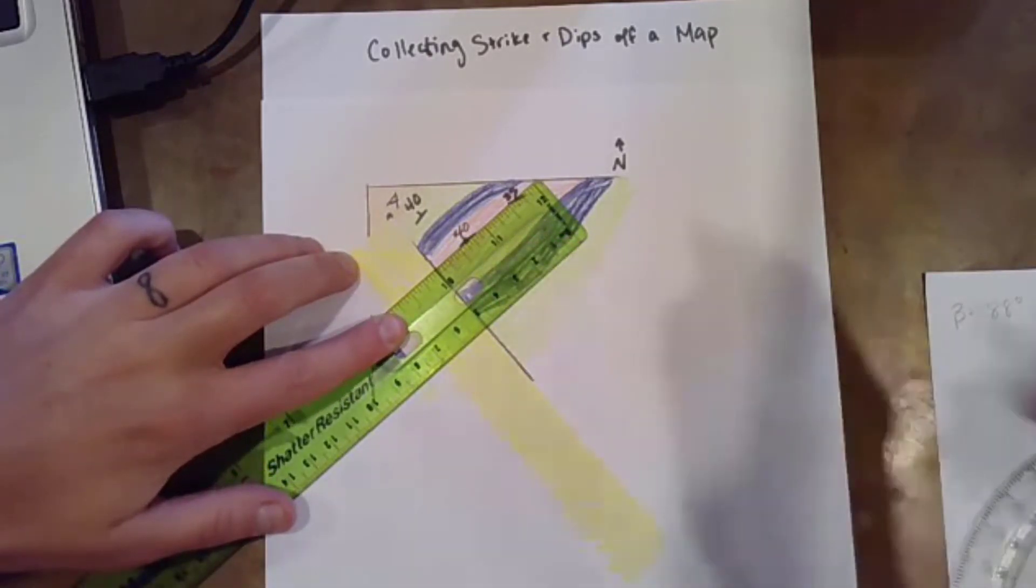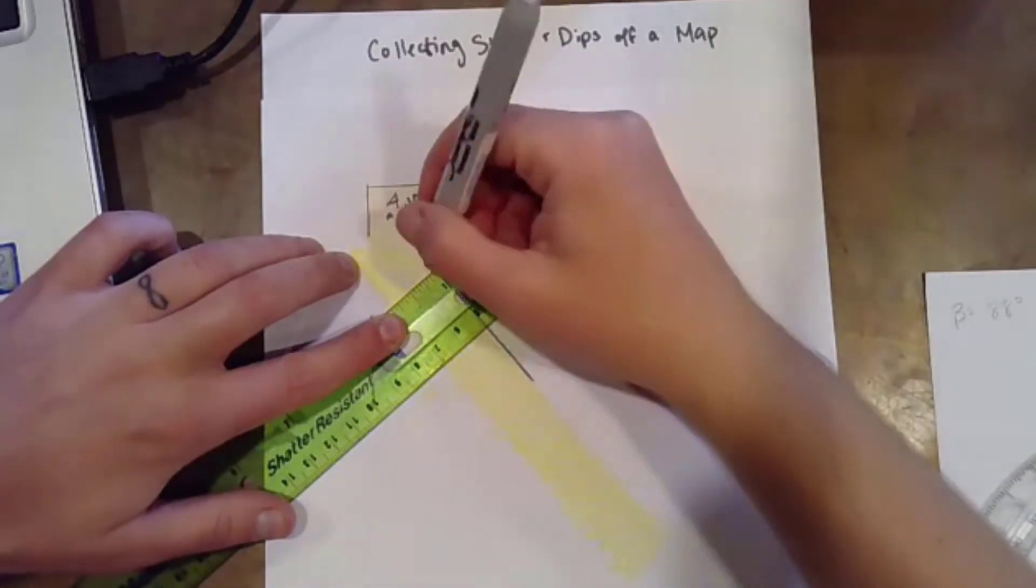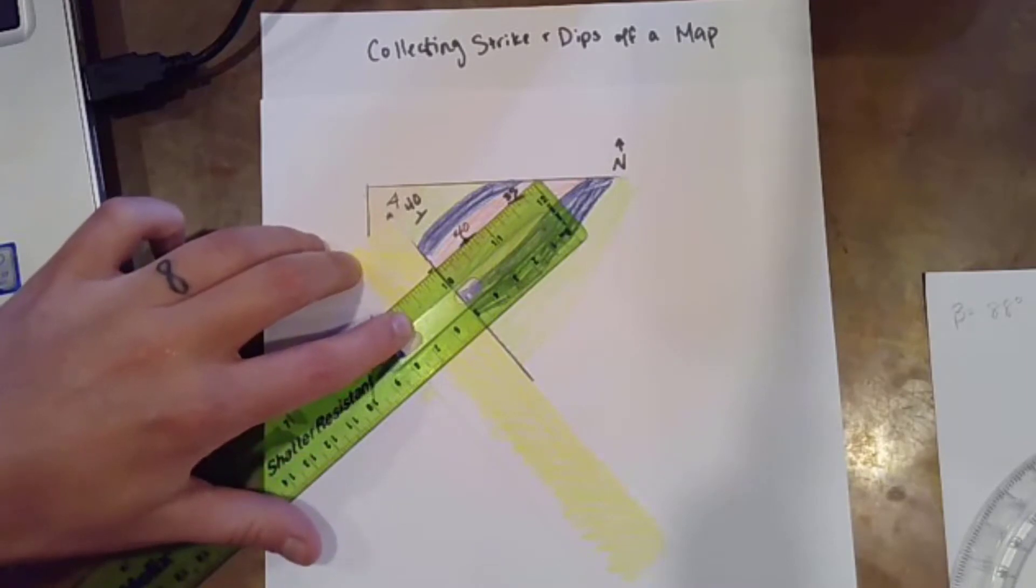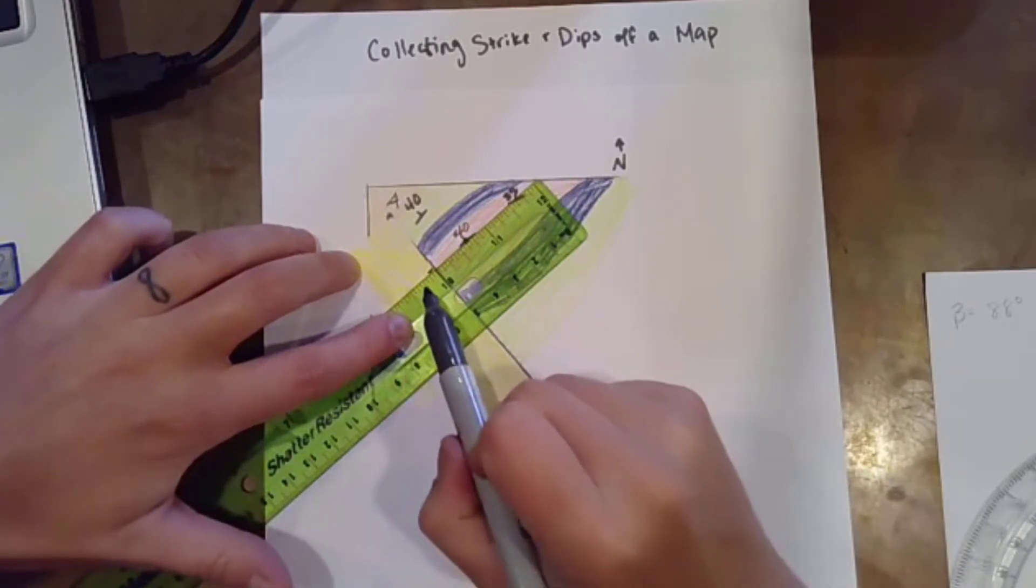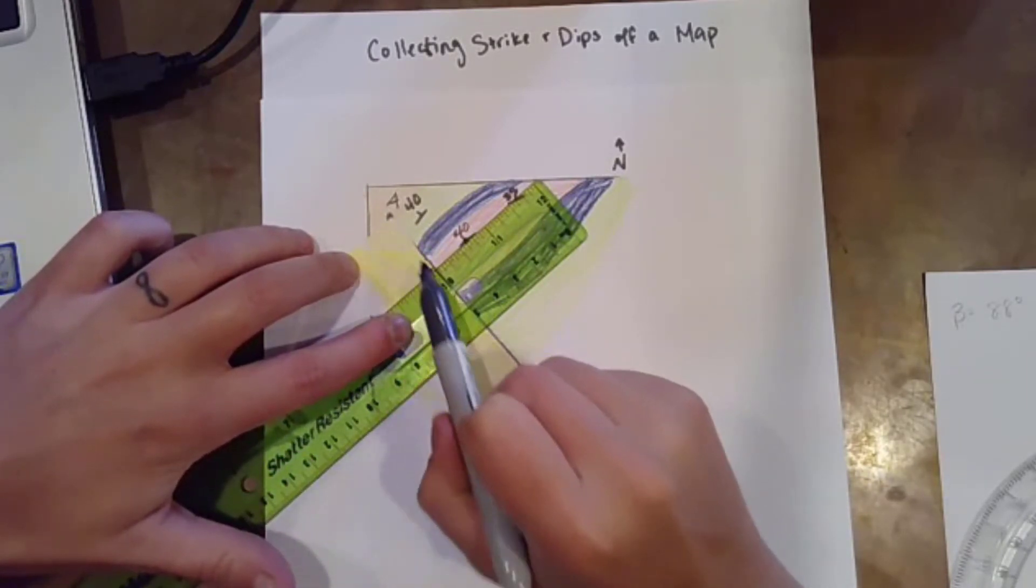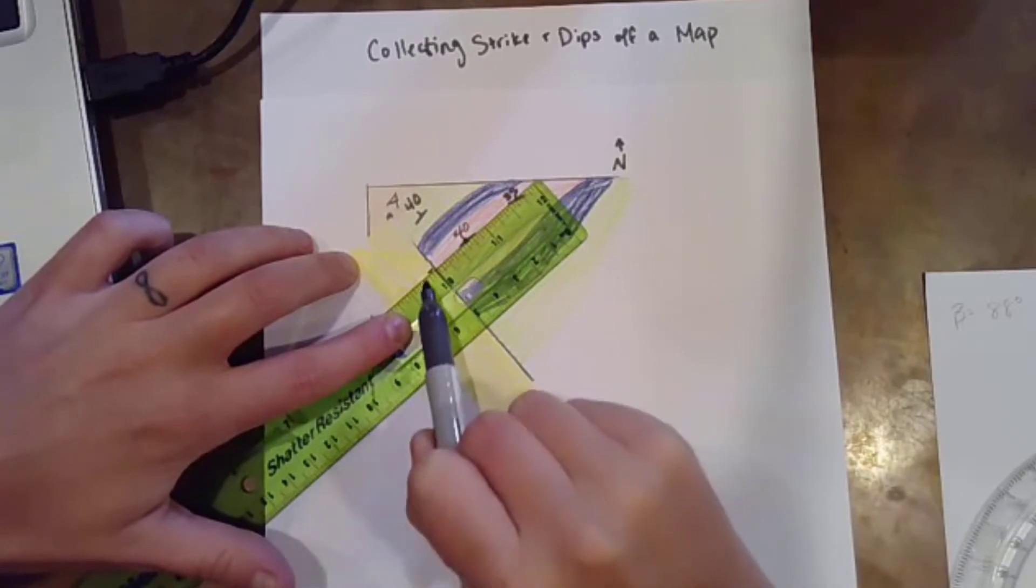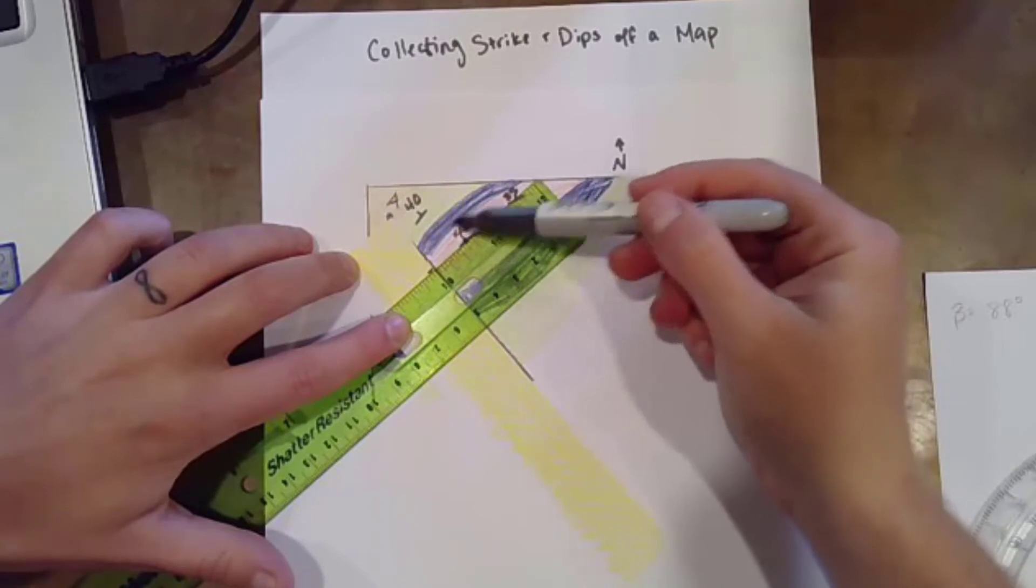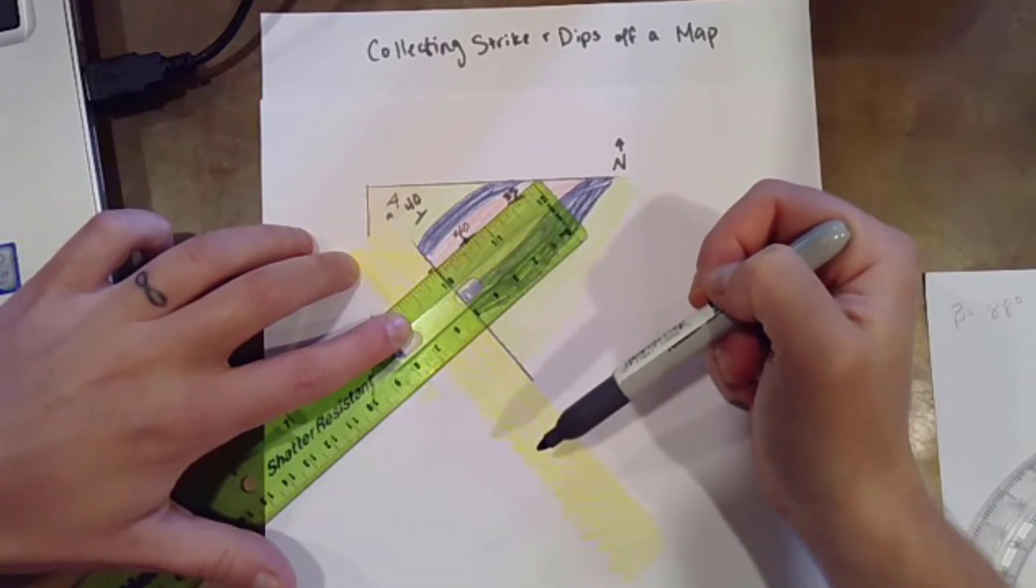Once you get there, you're going to make your tick mark on your profile line, on your piece of paper that you're using to collect this information. Now this represents the position along my profile where I'm going to eventually plot a sled or a tadpole that shows or conveys that dip, strike and dip information.